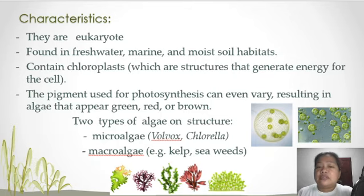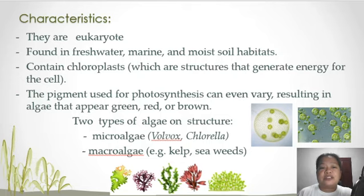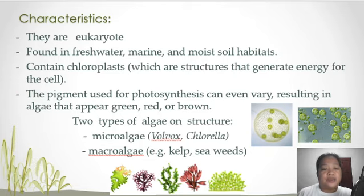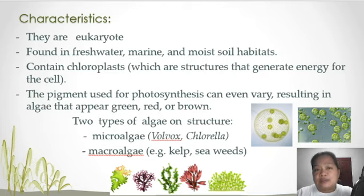There are two types of algae based on structure. It could either be unicellular, which we call the microalgal group, or the multicellular type called the macroalgae group, such as kelp and some species of seaweeds.